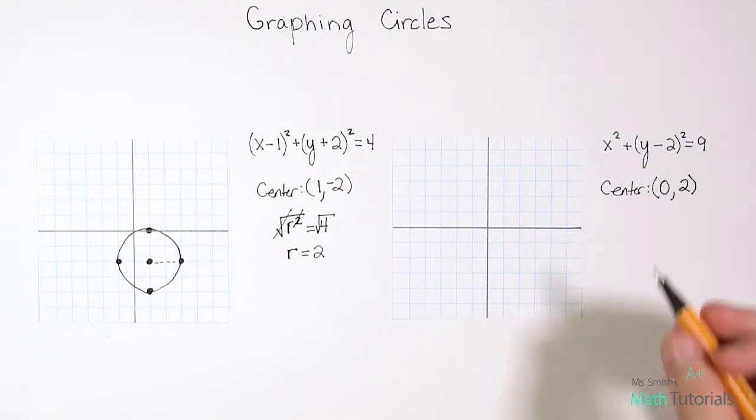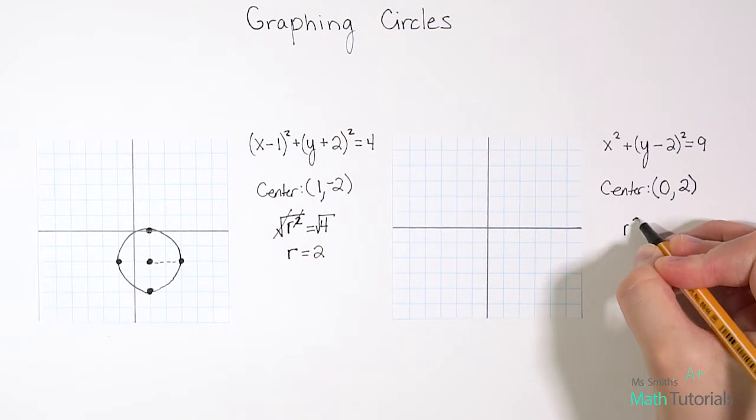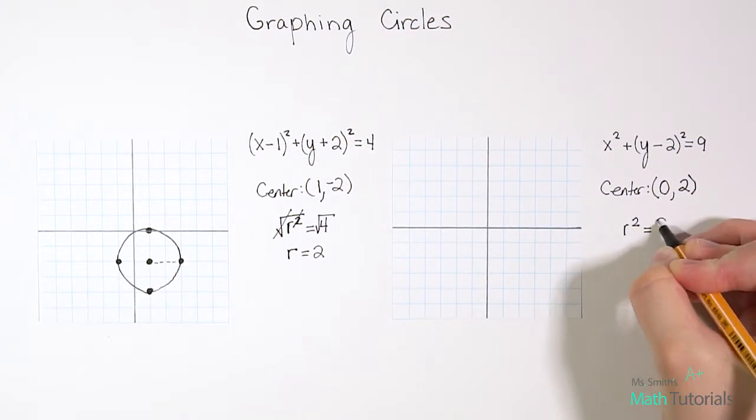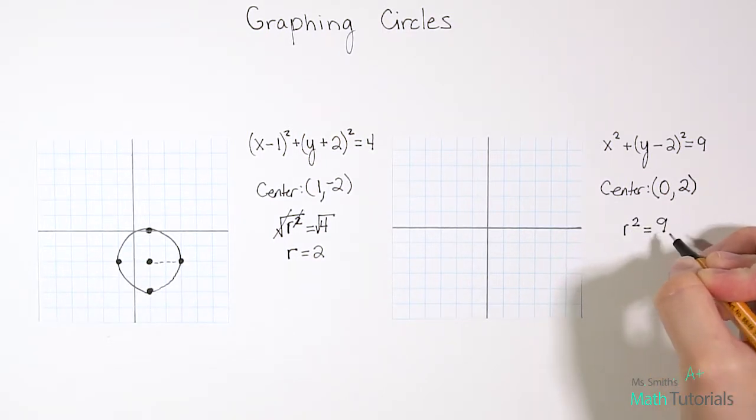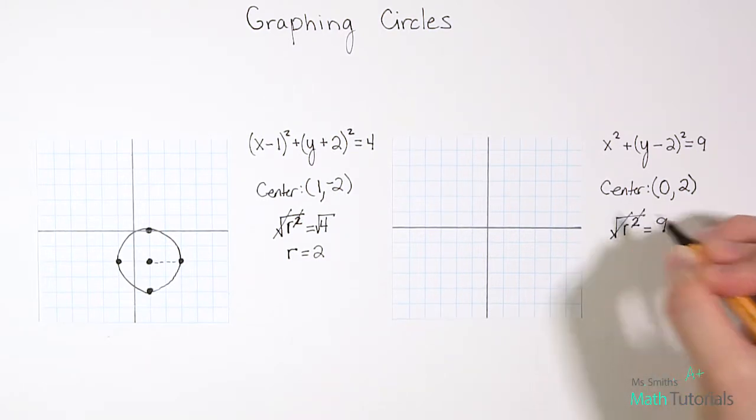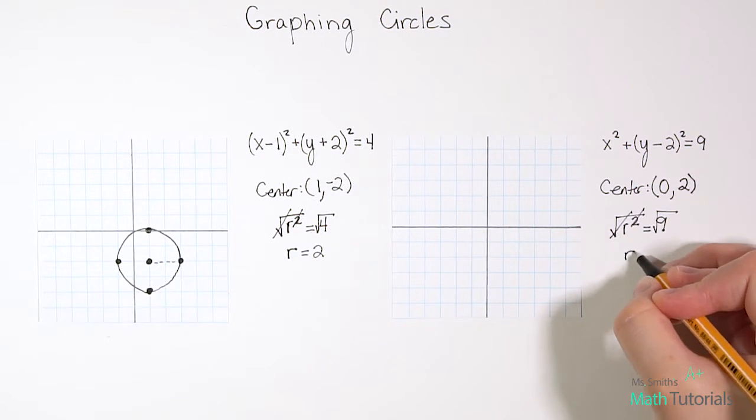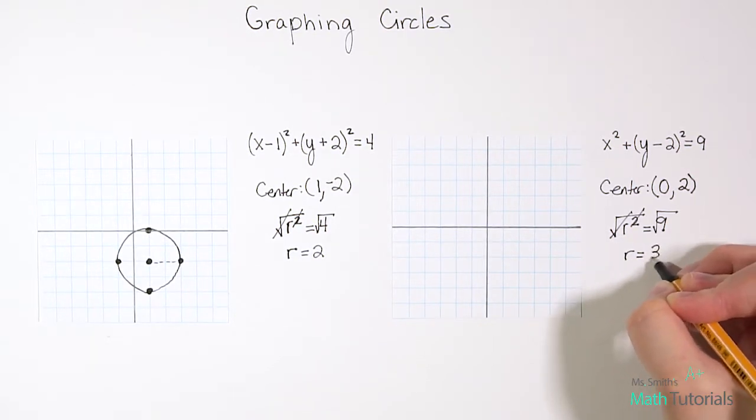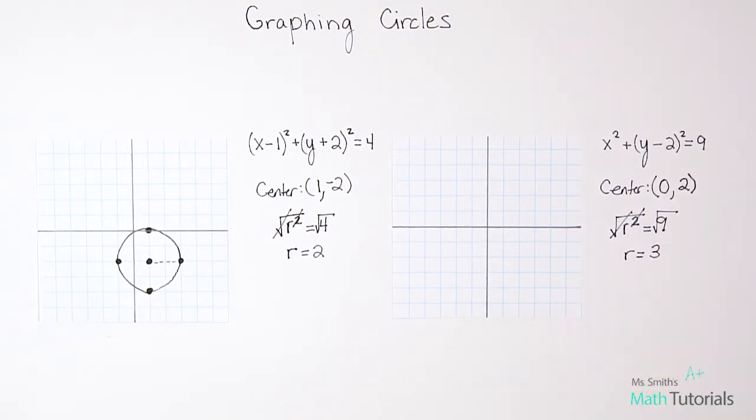And then remember that 9 is our r squared equals 9. But we don't want to know r squared, we just want to know the radius. So we take the square root of both sides and we get just r equals square root of 9 is 3. So that tells me we have a center of 0, 2, and a radius of 3.